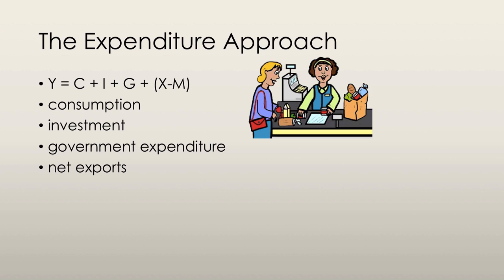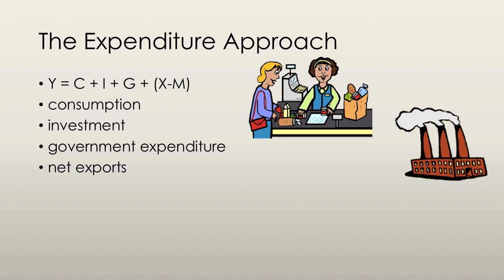However, this does not include the purchase of new homes because that is generally included as a part of investment spending. Investment spending is simply the expenditure on capital equipment and buildings by firms and the additions to business inventories. This also includes the spending on new homes by households.